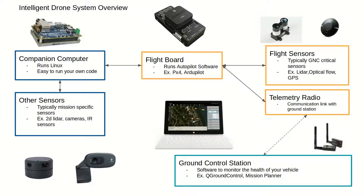The next piece of hardware that you typically add to your drone is the companion computer, and the companion computer really augments the computing capability of your flight board. For example, one really popular choice right now is the NVIDIA TX2, and this is really popular because it has an embedded GPU, which is really good for computer vision applications. Another aspect to the companion computer is that it typically runs Linux, which means it's really easy to develop code, and you also typically add sensors that interface directly to the companion computer, and then the companion computer makes decisions — typically navigation decisions — and then tells the flight board where to go, and then the flight board handles more of the low-level control.